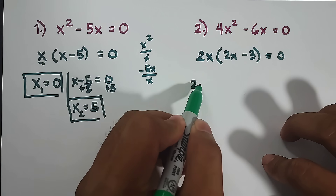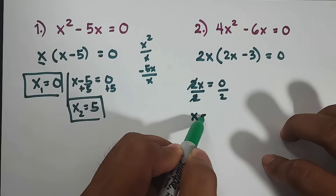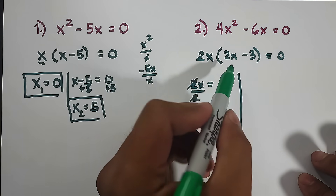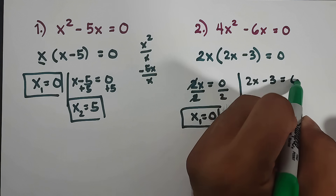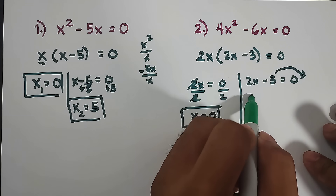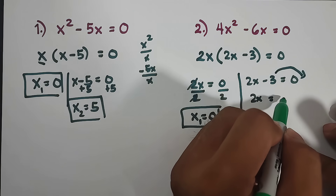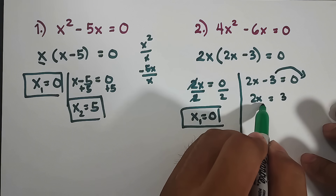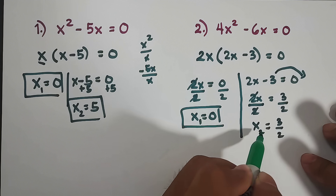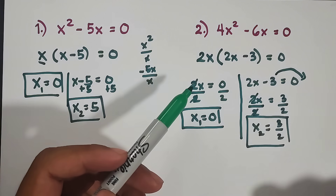The first factor is 2x equals 0. Divide both sides by 2 — cancel, cancel — and x is 0 divided by 2, which is still 0. This is x sub 1. For the second factor, 2x minus 3 equals 0. Transpose negative 3 to the other side — it becomes positive 3. So 2x equals 3, divide by 2, and x equals 3 over 2. This is x sub 2. The roots of 4x squared minus 6x equals 0 are 0 and 3 over 2.